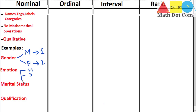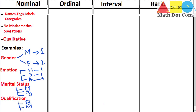Another example is emotions — emotions can be happy, sad, or angry, and you can assign values 1, 2, or 3 to them. Another example is marital status — either married, single, or divorced. Another is qualification — whether someone is doing bachelors, masters, or PhD. These are all different levels in the nominal scale that are basically names, labels, tags, or categories.